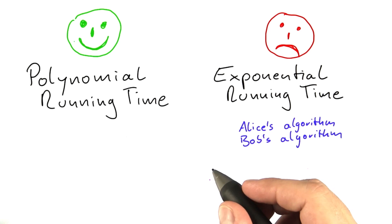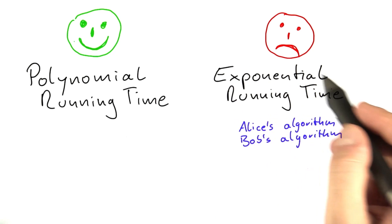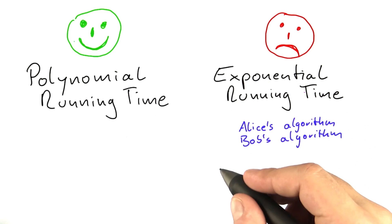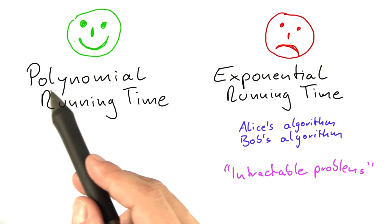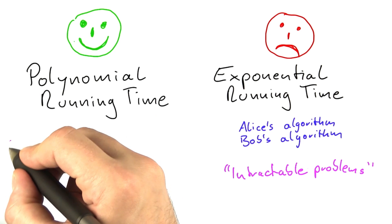And there's a special terminology for that. So problems or computer problems where you only have exponential time algorithms are called intractable problems. And those computer problems where you can find a polynomial time algorithm, those are called tractable problems.